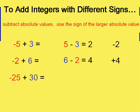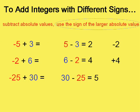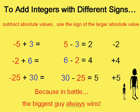One more. Negative twenty-five and thirty. We subtract the absolute values because we have one of each. We get a five and what's going to decide whether that's a positive five or a negative five? We're going to use the sign of the largest number. The largest absolute value. The answer is going to be positive five. So when we add integers, we're going to end up using the sign of the largest absolute value. Because in battle, the biggest guy always wins.